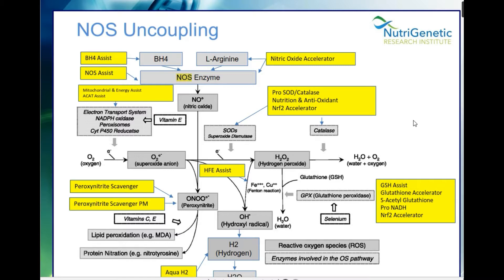Here's a chart on NOS uncoupling. BH4 on the top left and L-arginine are supposed to work together with the NOS enzyme to make nitric oxide. Nitric oxide is very beneficial, but there's also some nitric oxide that's not beneficial. When we have NOS uncoupling, peroxynitrite is being made, which leads to lipid peroxidation and protein nitration, and that inflammation just keeps going on and on. L-arginine can really fuel that system. If we've got this uncoupling going on, we should be avoiding things like arginine, because while arginine normally is wonderful, in the right conditions it can be a bad thing.